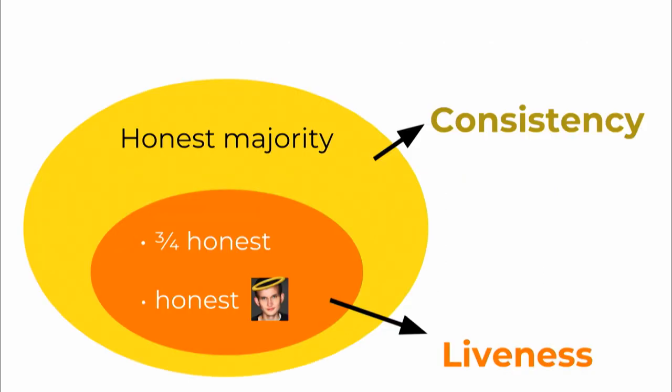So now we can reflect on what this very simple protocol buys us. First, whenever the voters are honest majority we can achieve consistency. What is important here is that consistency doesn't rely on the leader being honest. Notice that in my proof I never use the fact that the leader has to be honest. The proof only relies on the fact that honest nodes vote uniquely. For liveness we have to assume something stronger: we need to assume that not only are three-quarters of the committee honest and online, we also need that the leader must be honest and online too.